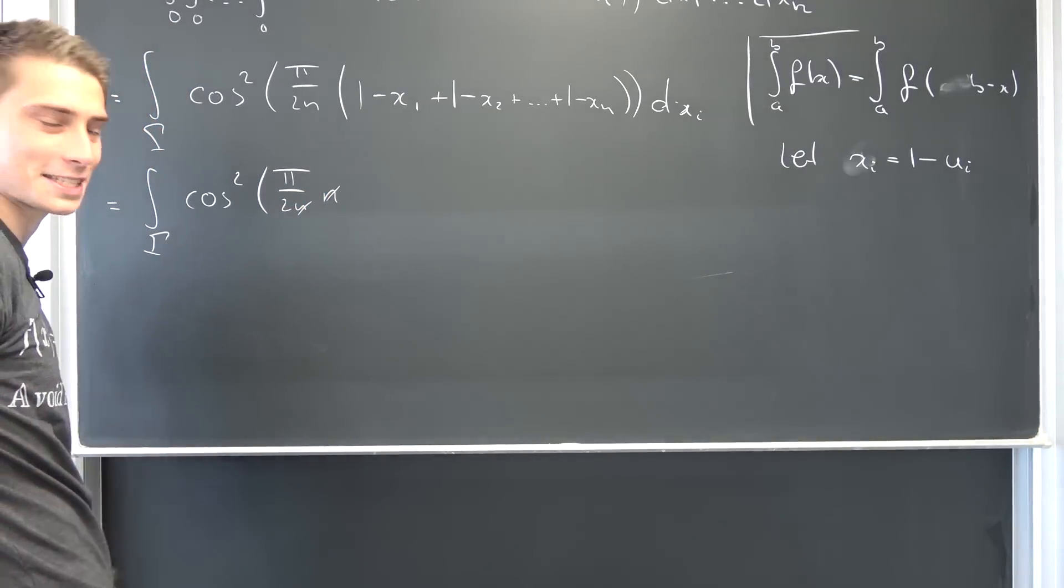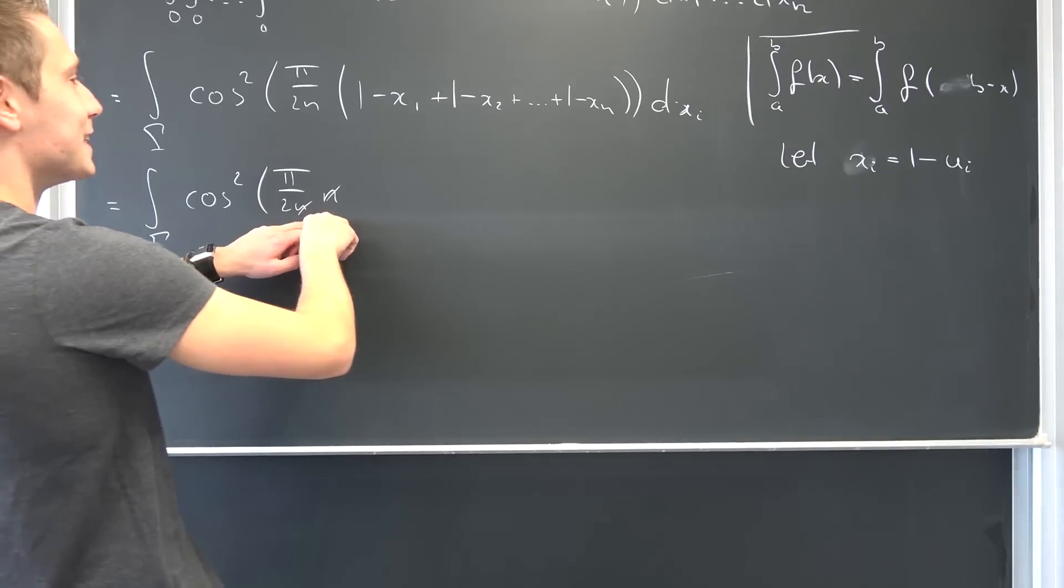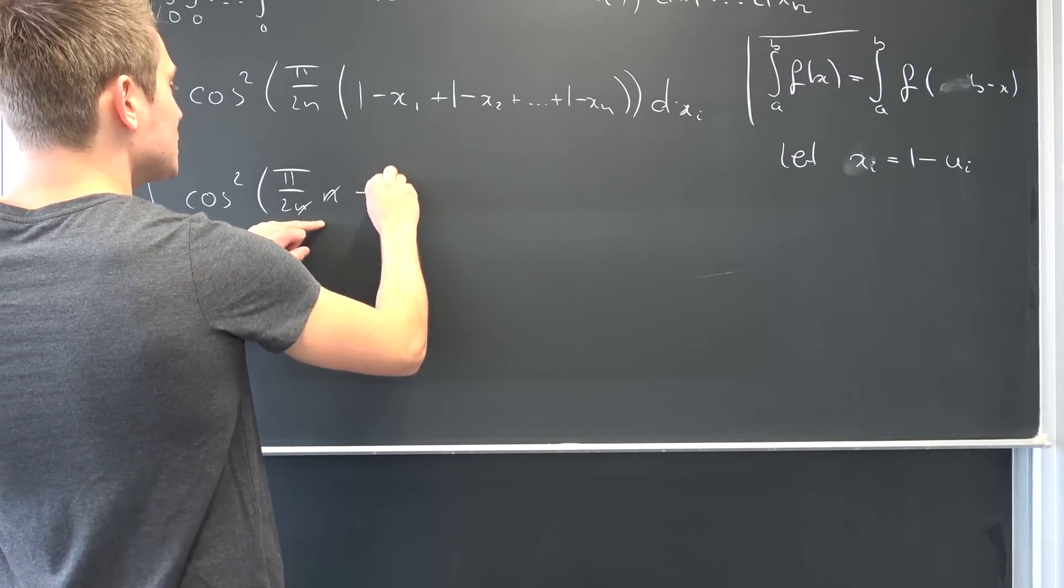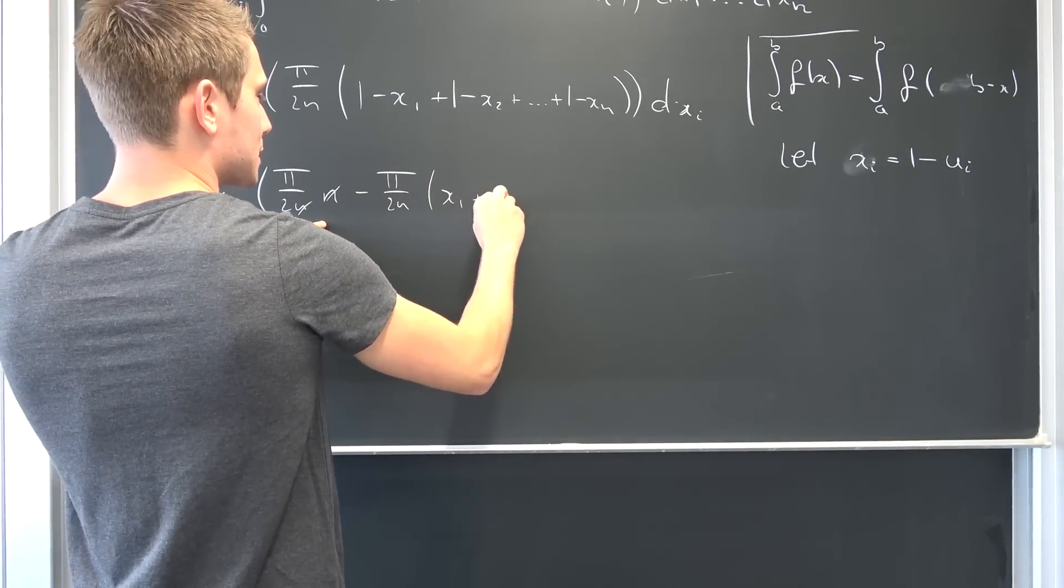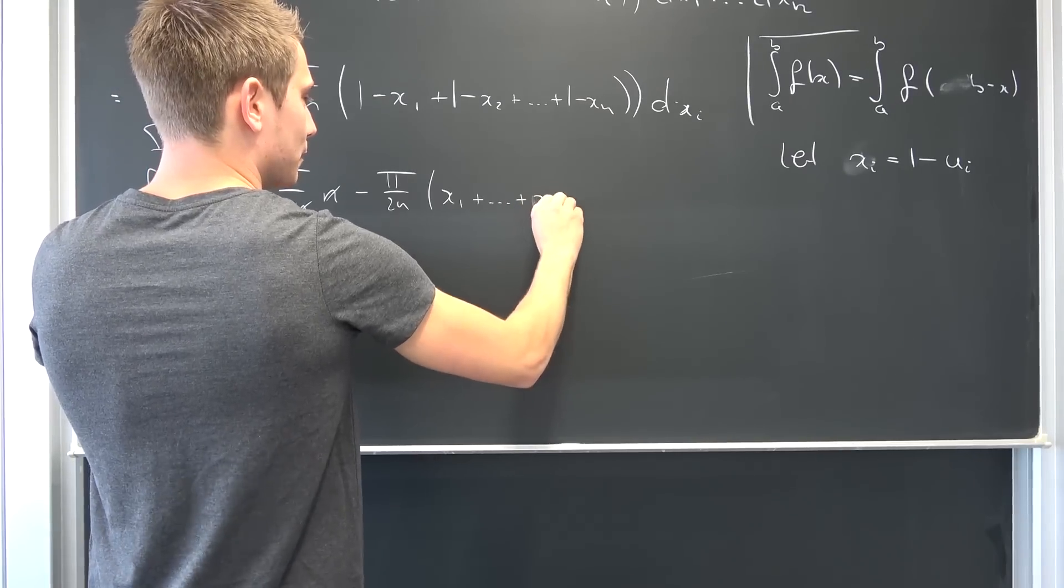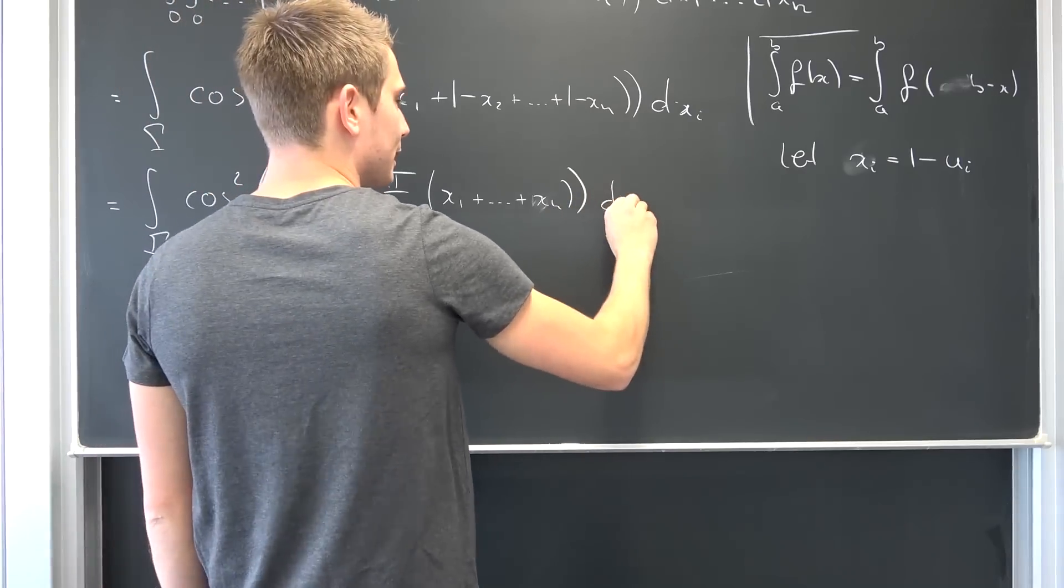And then we are also going to have minus pi over 2n and then x1 plus dot dot dot up until xn yet again, dxi.